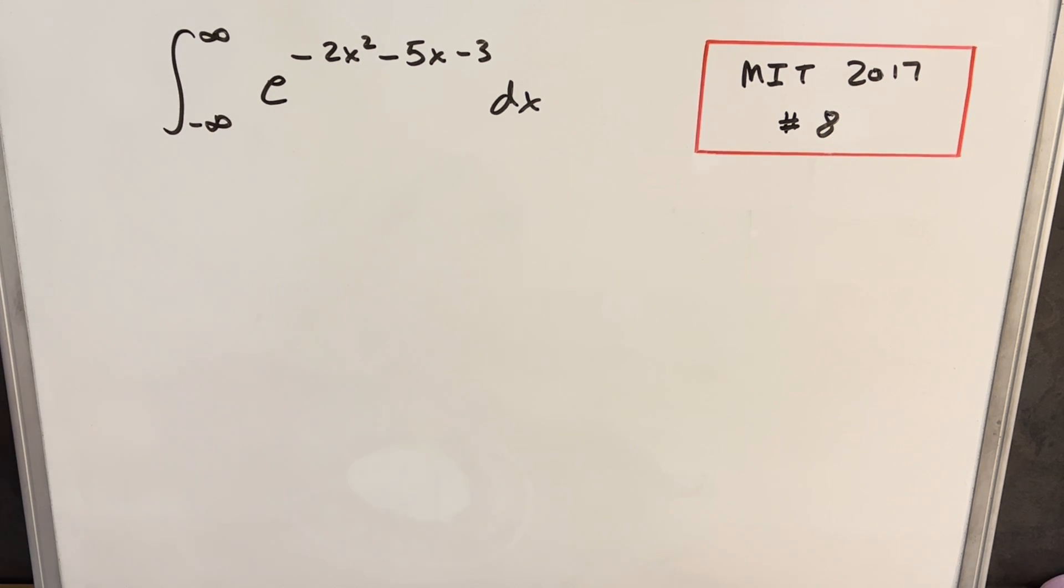Okay, we have another integral here from MIT Integration B. This is from 2017, problem number eight. We have the integral from minus infinity to infinity of e to the minus 2x squared minus 5x minus 3 dx.